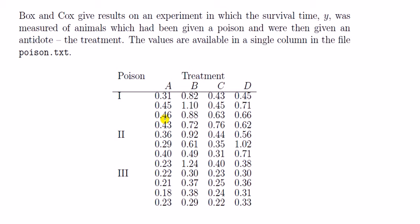What we can see is that there are a total of 12 combinations or conditions, because we have Poison 1 given treatment A, Poison 1 treatment B, Poison 1 treatment C, and so on. So you can see all together there are going to be 12 combinations of treatment and poison. In other words, 12 conditions.